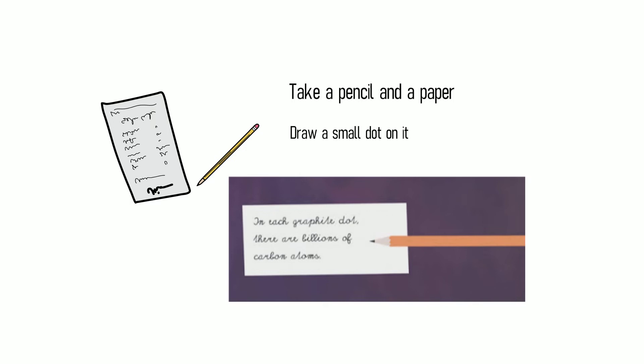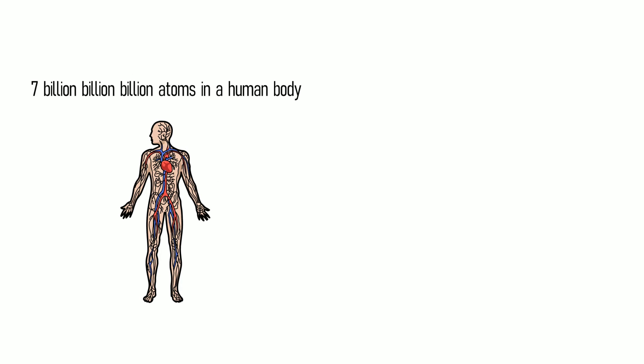However, this number is ridiculously small if we compare to the number of atoms in an average size human body, which is staggering 7 billion billion billion atoms. Even if we consider the bodies of the smallest and simplest existing organisms, which is bacteria, we still get a huge number of atoms in billions. Now let's move on from the world of indescribably small to the world of incredibly big.